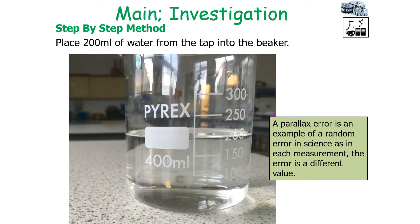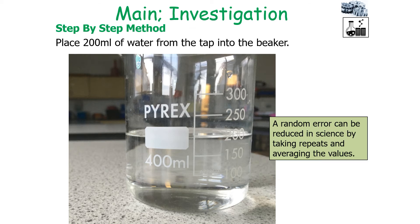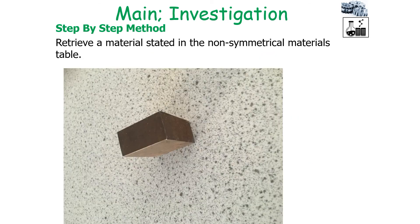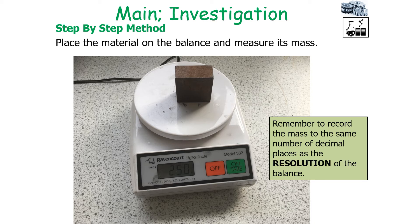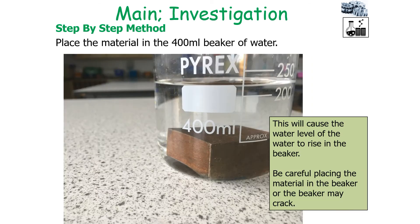A parallax error is an example of a random error in science. A random error is when the value of the error is different for each measurement that you take, and it can be reduced by taking repeats and averaging the values. You would then retrieve a material from the irregular shaped object materials table, place it on the balance and measure its mass, remembering to record to the resolution of the balance.